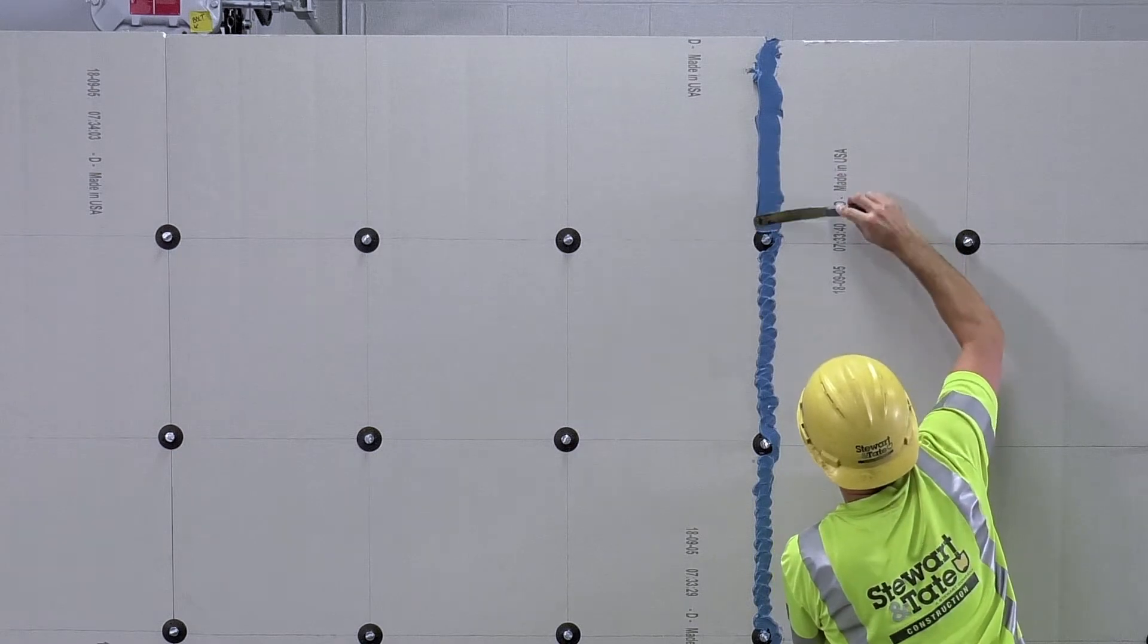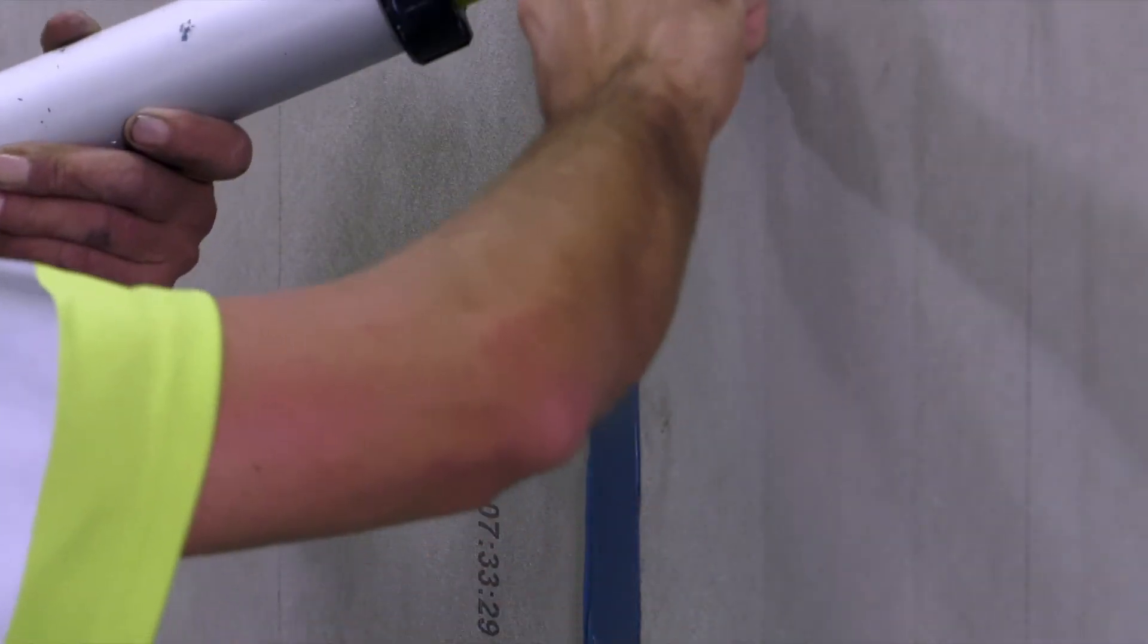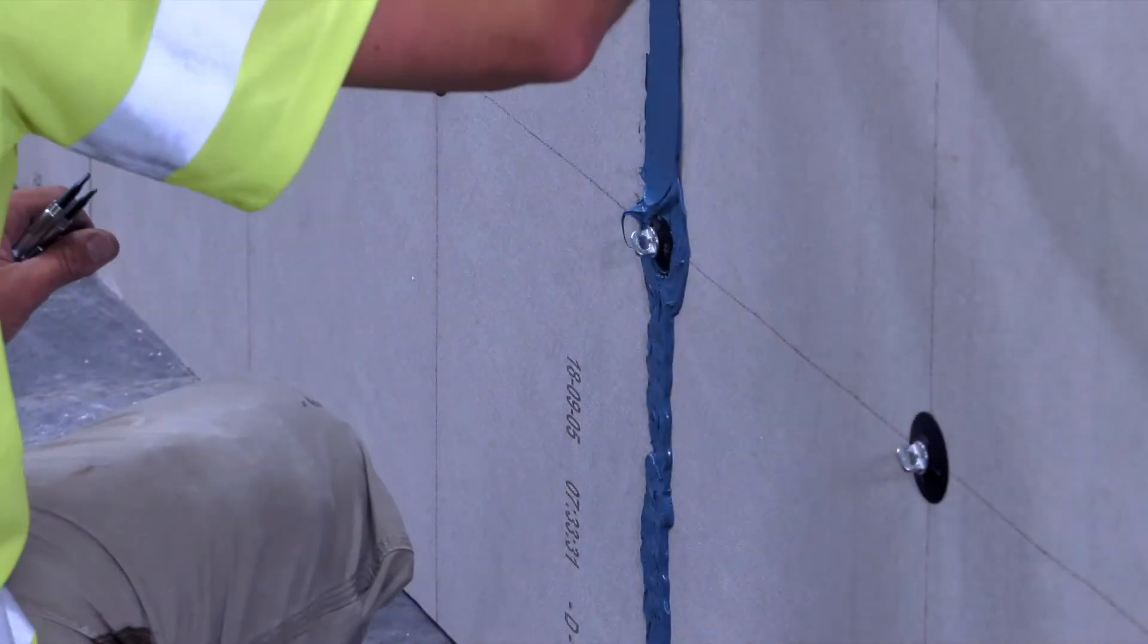After applying XCI Barabond, the next step is to smooth over the surface with a trowel for a consistent seam. Add more Barabond liquid if needed in areas where the seam is not continuous.